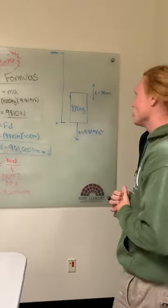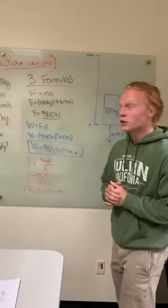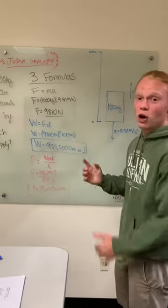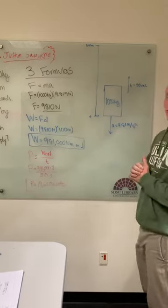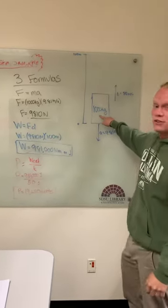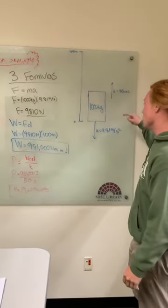I'm going to talk about the actual numbers that we used. In the initial problem, we weren't given force, so we had to find force by using the mass. The mass of the elevator is 1,000 kilograms, and then the acceleration.